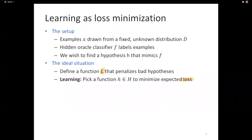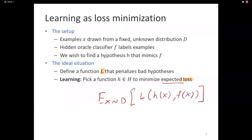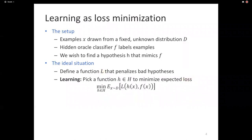Our goal is to find the hypothesis that has the lowest loss. Ideally, we would like not just lowest loss but the lowest expected loss — expectation over all possible examples drawn from the distribution. So we can frame learning as minimizing the expected loss over this distribution.